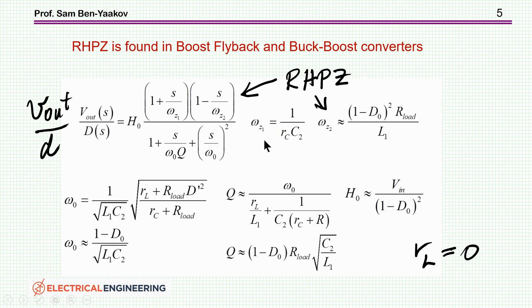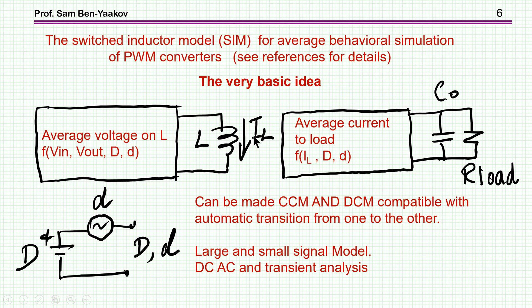So this is very well known and I'm going now to do simulation of this system using average model, and in particular I'm going to use the switched inductor model that I have developed some years ago. This can be used for average behavioral simulation of PWM converters. There is a reference on the page of this video. Now the very basic idea without going into details of this method is the following: we are starting with generating an average voltage that is imposed on the inductor. So we're imposing the inductor to the average voltage on it and this will be a function of V in, V out, the operating point duty cycle and the perturbation.